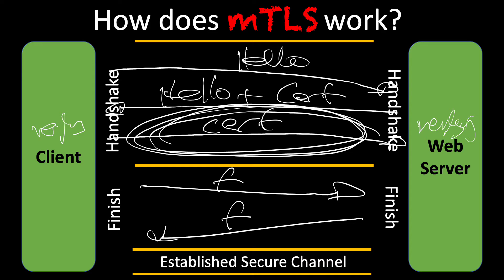There may be situations where we actually want to authenticate the client. Think in terms of IoT devices — they don't necessarily log in, so we want to put a certificate on there to authenticate them. There may be microservices that we want to secure, or devices that we want to authenticate that may be using cloud delivery networks. There are a number of reasons for this.